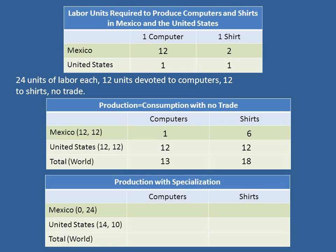Now, suppose that Mexico specializes and puts all of its 24 units of labor into shirt production, zero into computer production. Clearly zero computers. With 24 units of labor and two units of labor per shirt, you get 12 shirts. The United States now devotes 14 units of labor to computers and 10 to shirts, so we simply get 14 and 10. Now look at the totals: we have 14 computers and 22 shirts. Total world production has gone up. With specialization we have more computers and more shirts than when the two countries were not specialized — up from 13 and 18 to 14 and 22. Big increase.